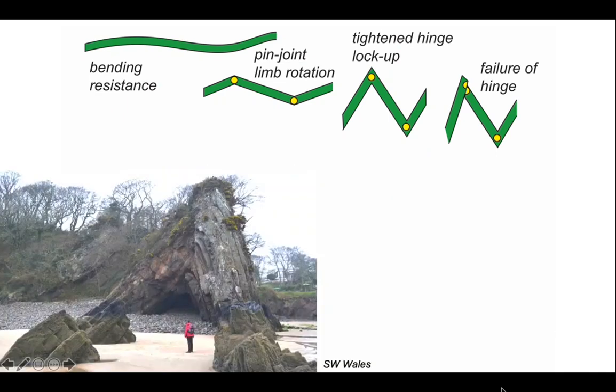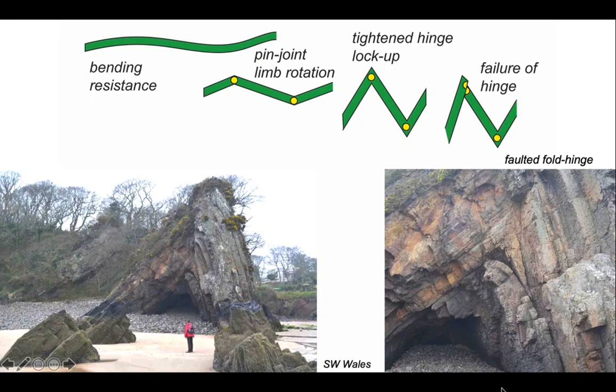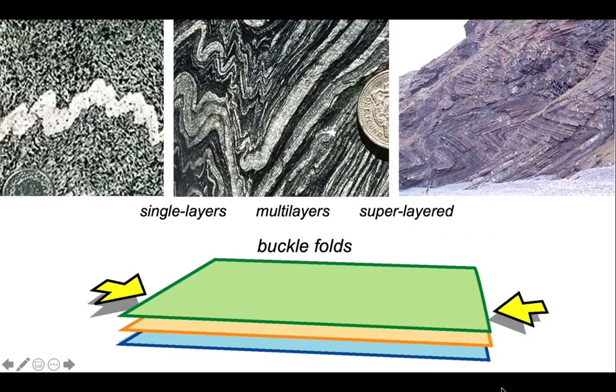So this is the cyclic evolution for an individual stack of folds. We can see the product of this in structures like this. So if we look very carefully into the core of this antiform, you can see that the hinge has failed by a little fault structure. It's a faulted fold hinge.